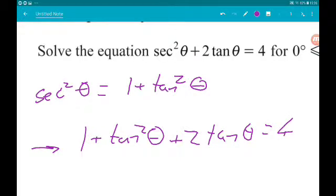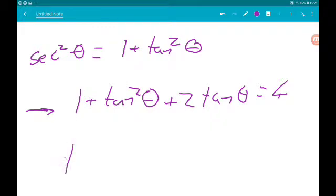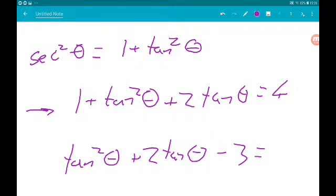So we need to get everything on the same side. We can get tan squared theta plus 2 tan theta, 1 minus 4 is minus 3 equals 0.